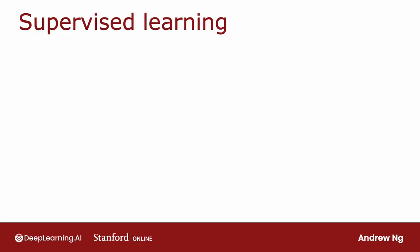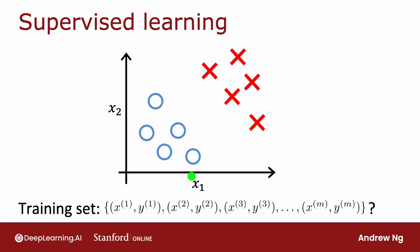Let me contrast clustering, which is an unsupervised learning algorithm, with what you had previously seen with supervised learning for binary classification. Given a dataset like this with features x1 and x2, with supervised learning we had a training set with both the input features x as well as the labels y, and we could plot a dataset like this and fit, say, a logistic regression algorithm or a neural network to learn a decision boundary like that. In supervised learning, the dataset included both the input x as well as the target outputs y.